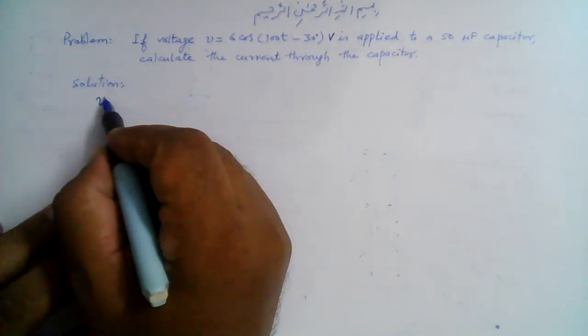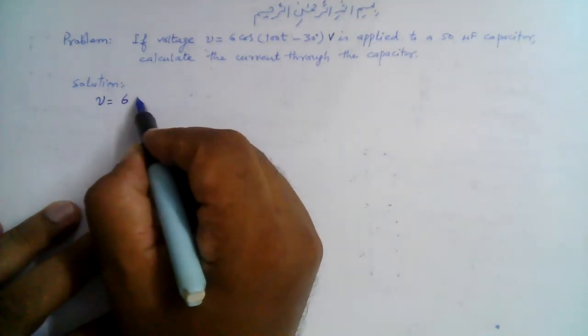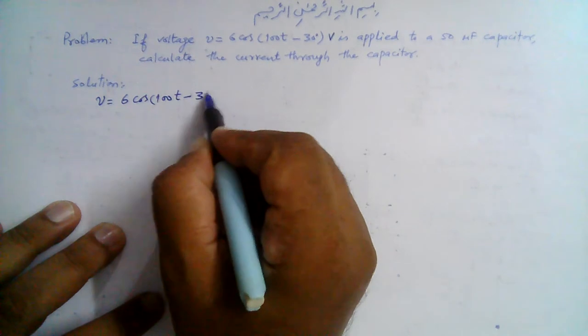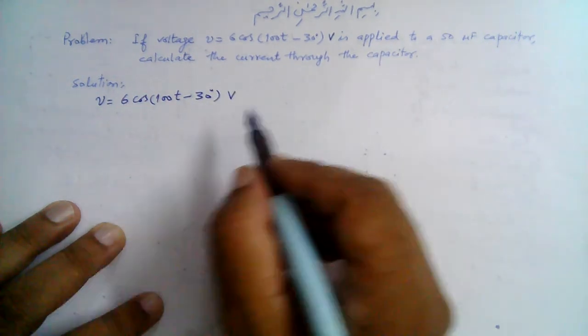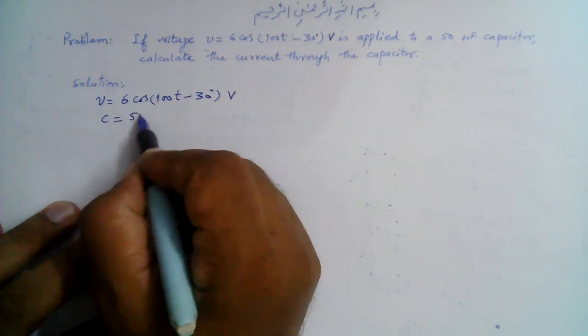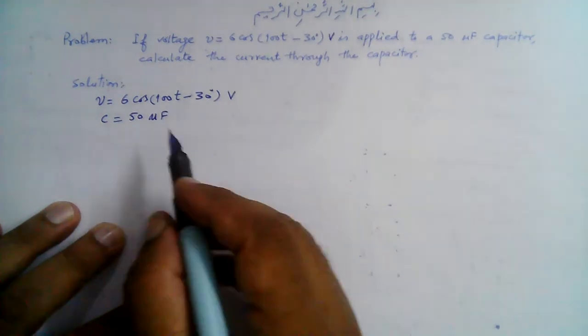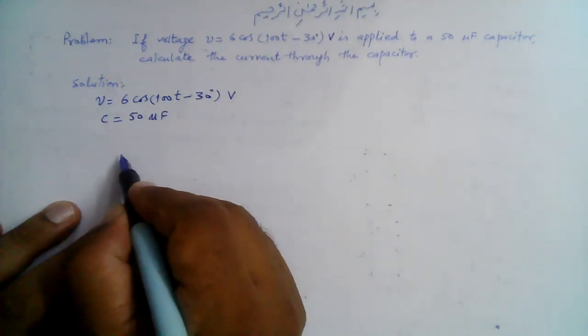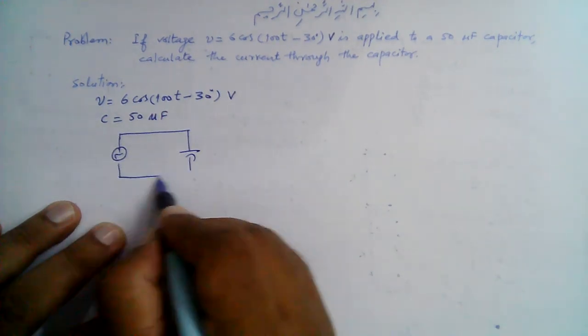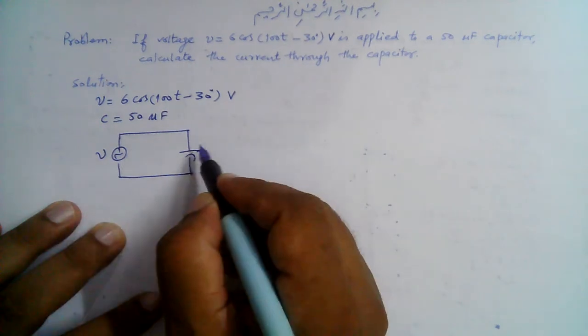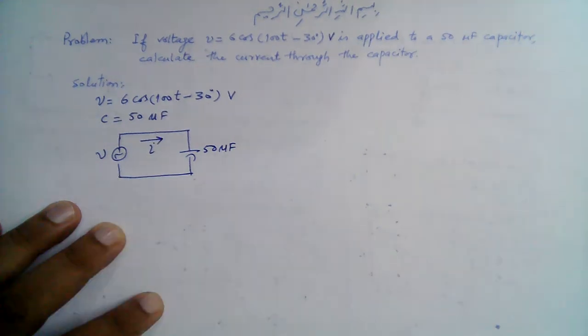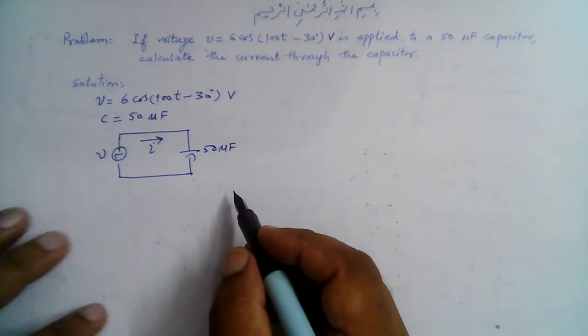We are given this voltage V = 6 cos(100T - 30°) volts, and the capacitance of the capacitor is 50 microfarads. So this is the simple circuit: this is V here, and this is the 50 microfarad capacitor, and we need to find this current I here.